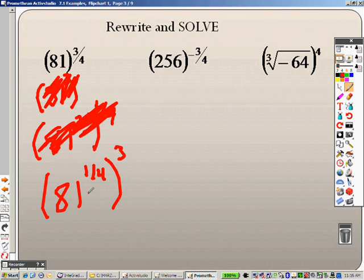However, can you think of four numbers that are exactly the same that when you multiply them together will give you 81? I can. 3, right? 3 times 3 times 3 times 3 is 81. So 81 to the 1/4th is 3.